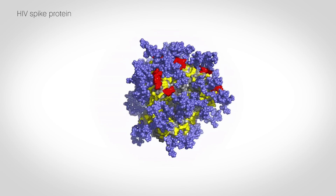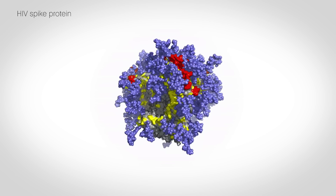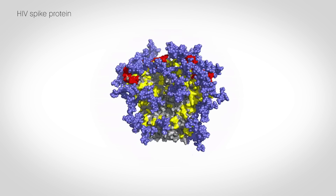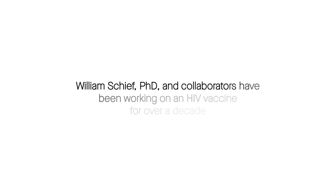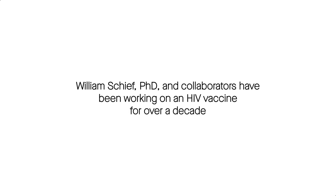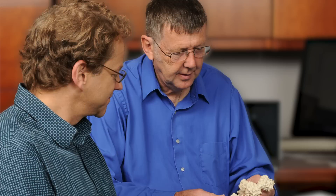We have to elicit antibodies that bind to specific patches on the spike that don't change very much. People in the field, including my colleague Dennis Burton and others, have discovered what are called broadly neutralizing antibodies against HIV that bind to these conserved patches.